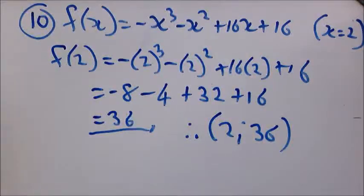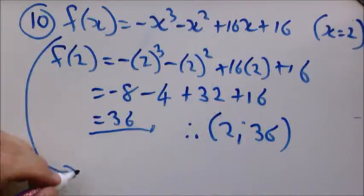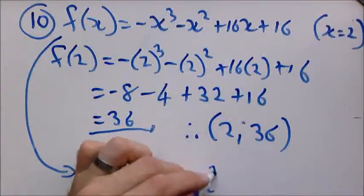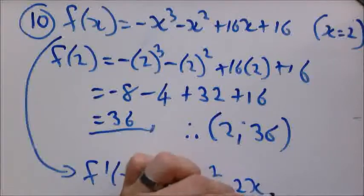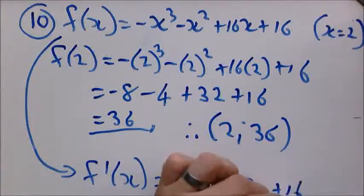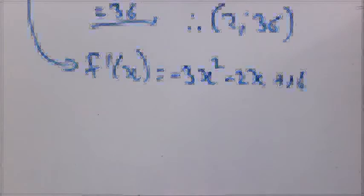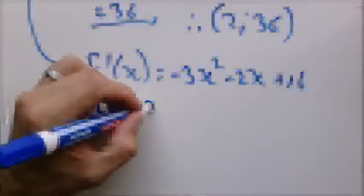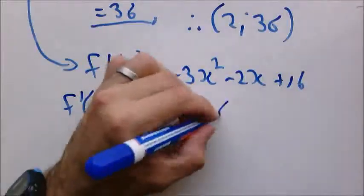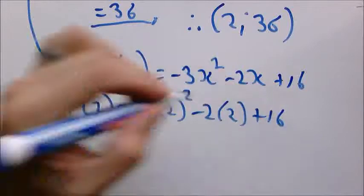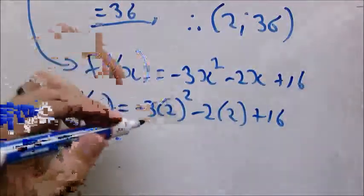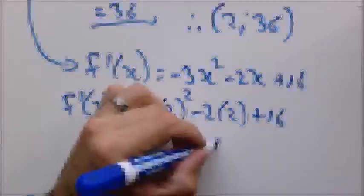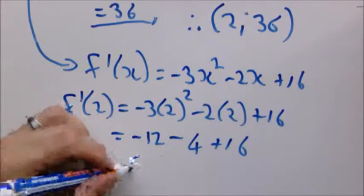Right. Now the derivative. You can see this becomes negative 3X square minus 2X plus 16. And to calculate the gradient at that point we substitute 2 in and calculate. So this becomes negative 3 times 4 minus 4 plus 16. So this becomes negative 12 minus 4 plus 16 equals 0.